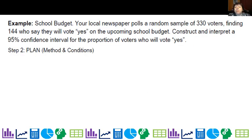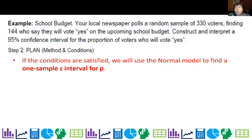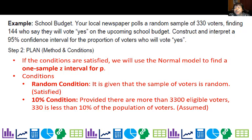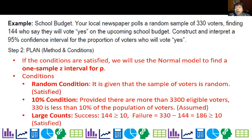Let's look at the plan for our school budget example. If the conditions are satisfied we will use the normal model to find a one-sample z-interval for p the proportion. Random condition: it is given that the sample of voters is random, so that condition is satisfied. Ten percent condition: provided that there are more than 3,300 eligible voters, 330 is less than ten percent of the population of voters, so we're assuming that one. Large counts: the number of successes is 144, since 144 said yes, and failures is the balance which is 186. Both of those are greater than or equal to ten, so our large counts condition is satisfied.